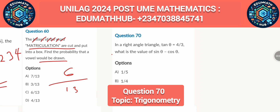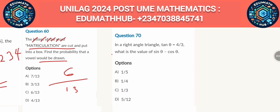For the next question, we have a right-angle triangle. We are told that tan θ = 4/3. Place θ in the triangle — the opposite side is 4 and the adjacent side is 3. We have to find the value of sin θ − cos θ.